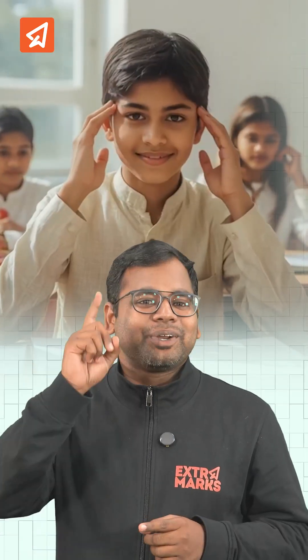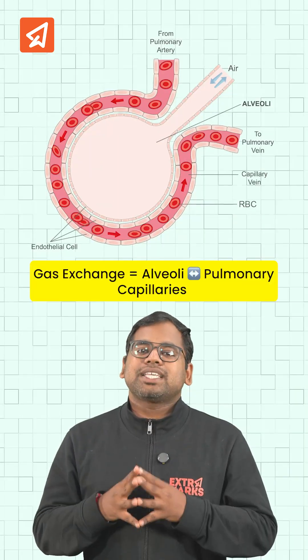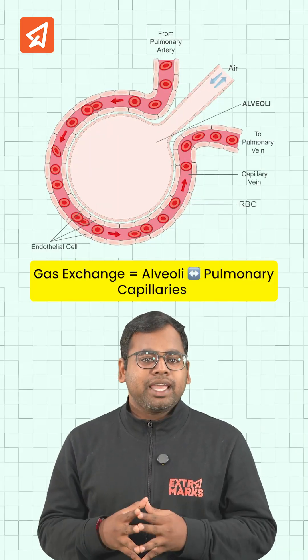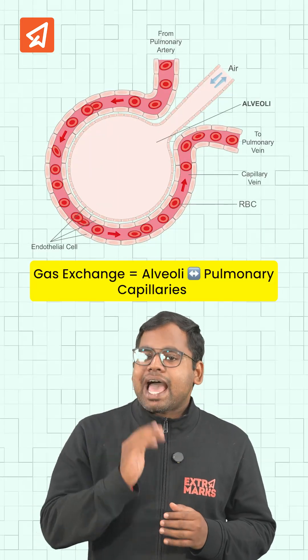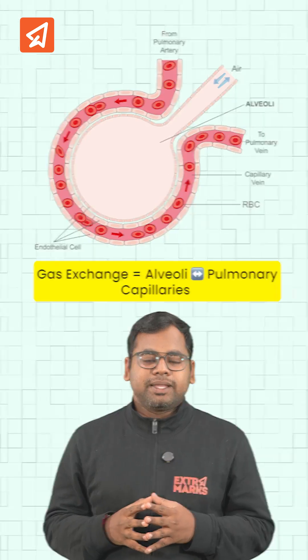To answer this question, you should firstly know the concept of exchange of gases. In the human body, gaseous exchange happens mainly between the alveoli and pulmonary capillaries.